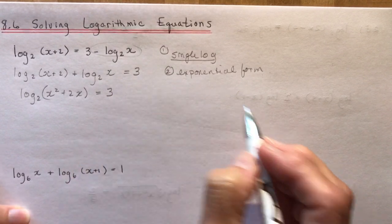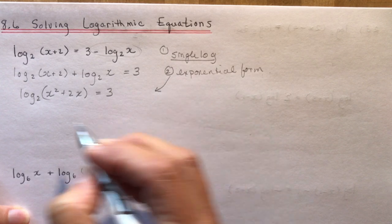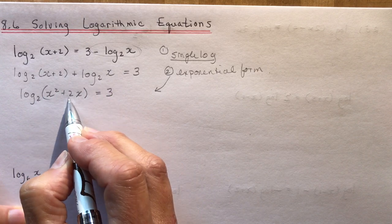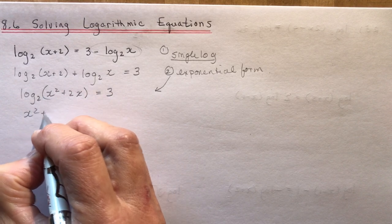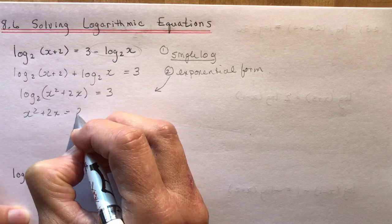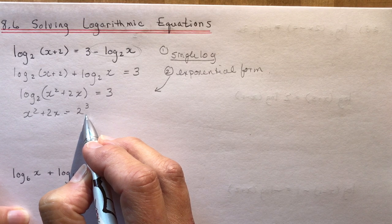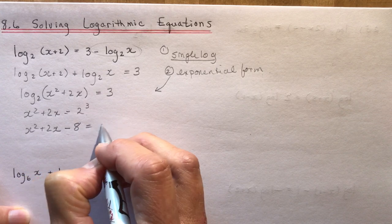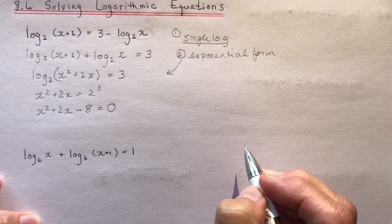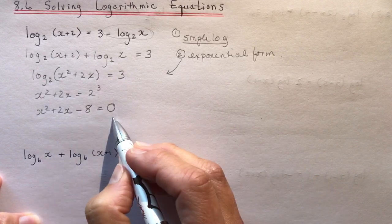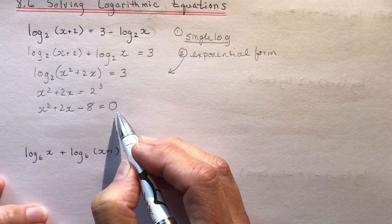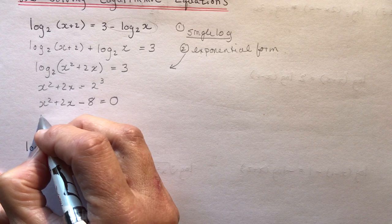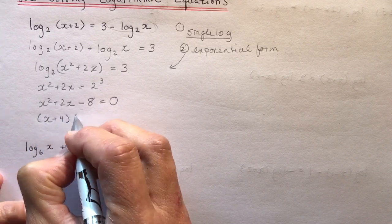x squared plus 2x equals 3. Now write it in exponential form. This is base 2, so 2 to the 3 is equal to x squared plus 2x, and 2 to the 3 is 8. Bring it to the other side and solve it. You're setting it up as a quadratic — factoring: multiplies to negative 8 and adds to positive 2, that would be plus 4 and minus 2.